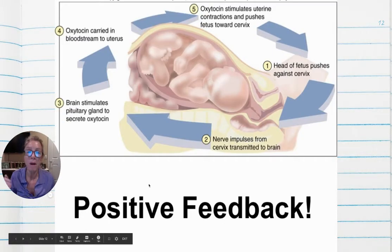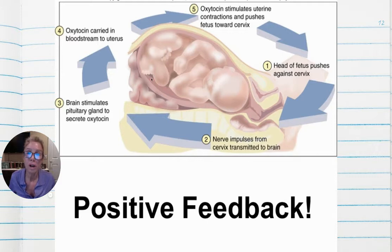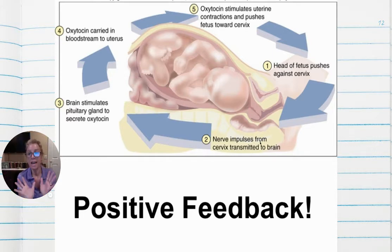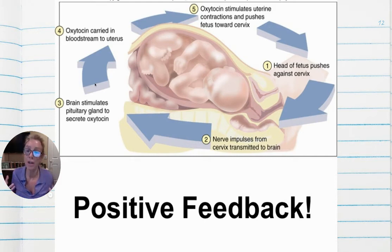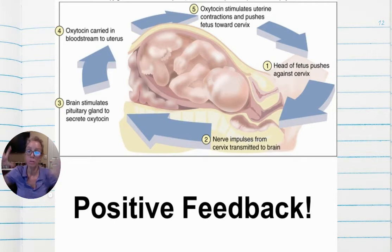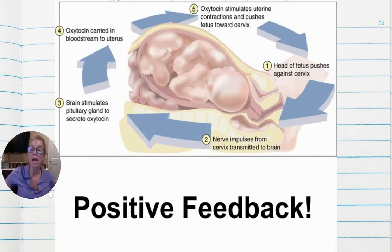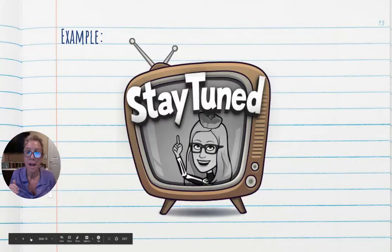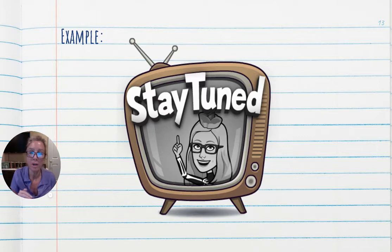For positive feedback, as the uterus contracts and pushes the baby's head against the cervix, the cervix detects that and sends impulses back to the brain. The pituitary gland secretes oxytocin, which travels via the bloodstream to the uterus, making it contract even more. This continues until the baby is born.